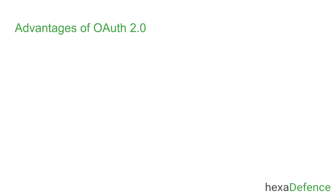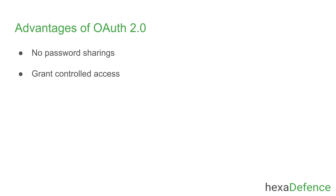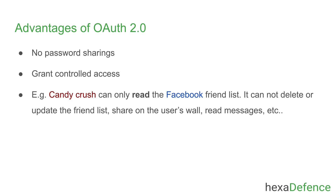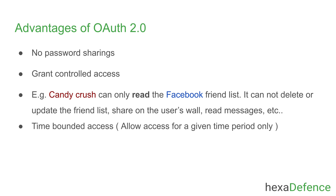Let's learn what are the advantages of Open Authorization. The first one is no more password sharing. Another one is fine-grained controlled access. In our scenario, with Open Authorization, Candy Crush can only read the Facebook friend list, but it cannot delete or update the friend list or any other resource in the user's Facebook account. Another advantage is that access delegation is time bounded — access is provided only for a given time period, perhaps for a few seconds or a few minutes.